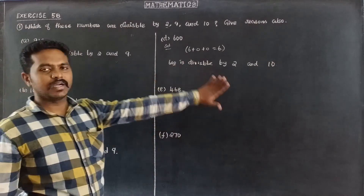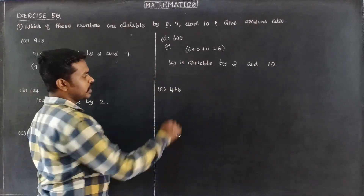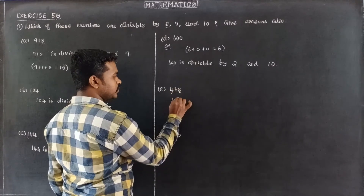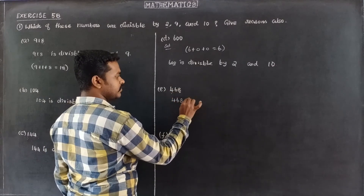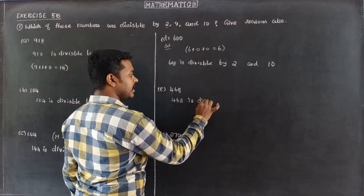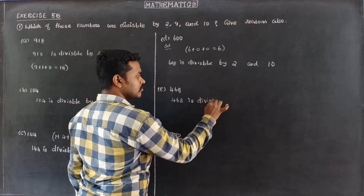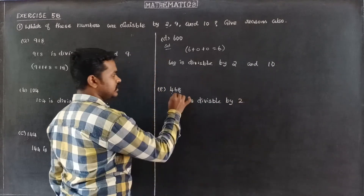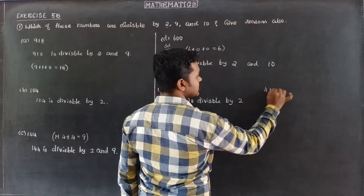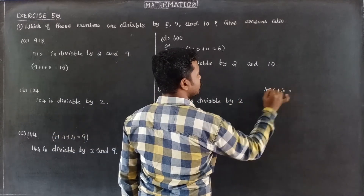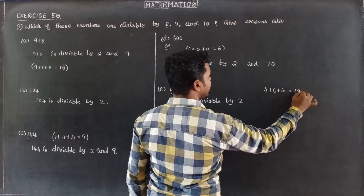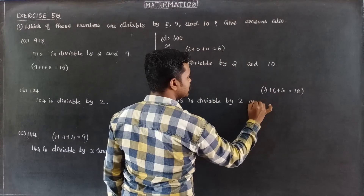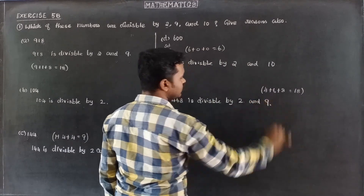Next, 468. The last digit is 8, so it is an even number and divisible by 2. The sum of the digits is 4 plus 6 plus 8 equals 18. Since 18 is divisible by 9, the number is also divisible by 9. Therefore, 468 is divisible by 2 and 9.